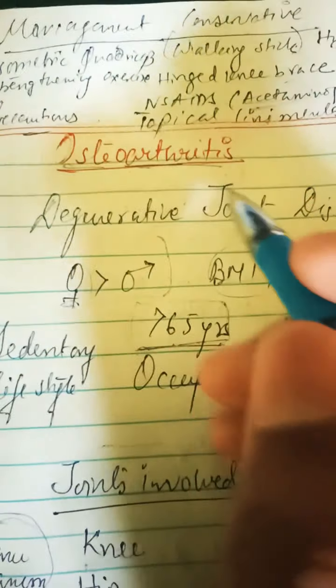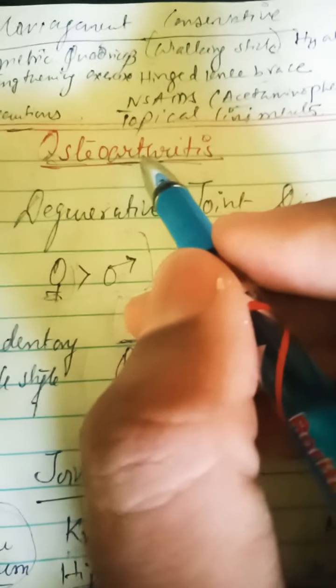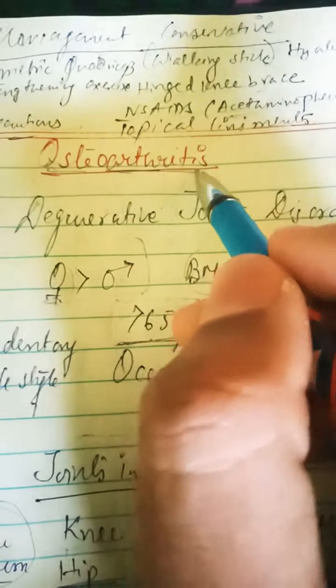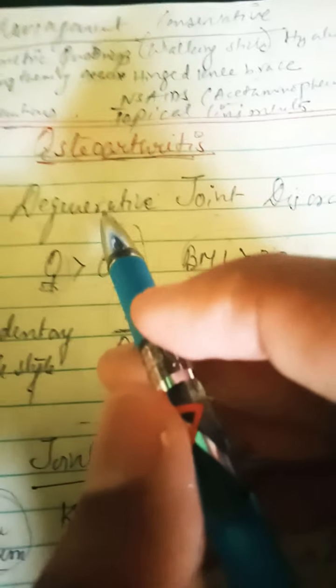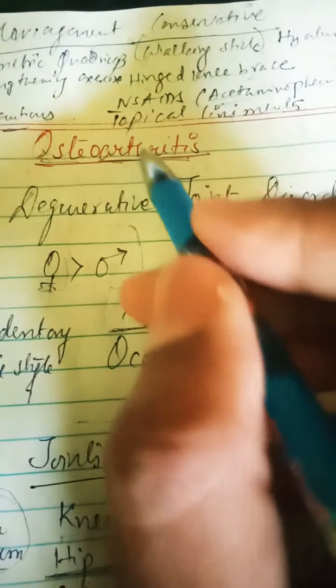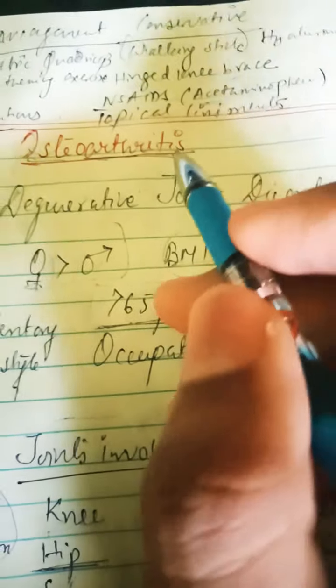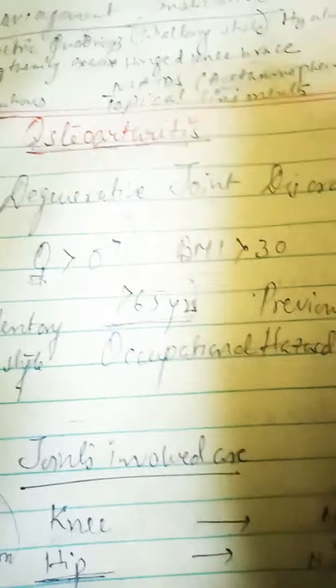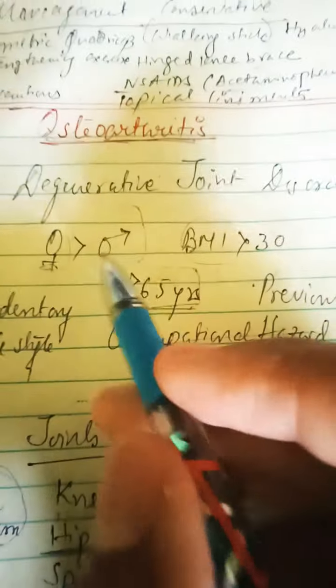Coming to osteoarthritis — 'osteo' means bones, 'arthritis' means joint disorder, that is joint inflammation — but it is a misnomer. Osteoarthritis is non-inflammatory in nature; it is a progressive degenerative joint disorder which is non-inflammatory in nature.